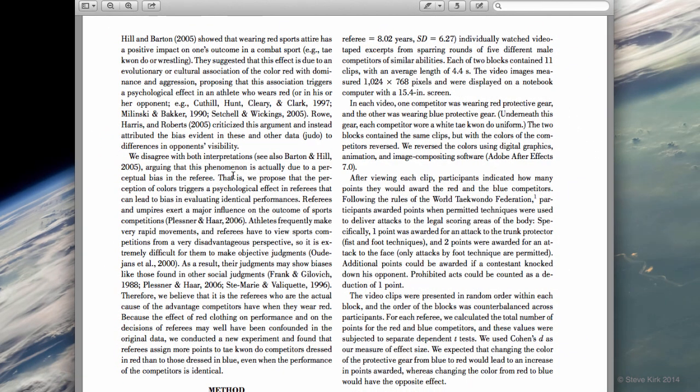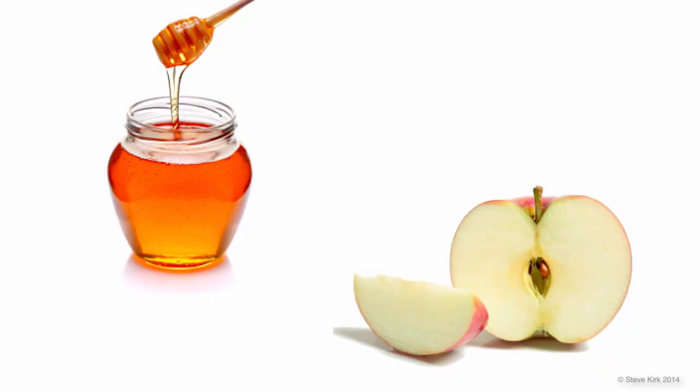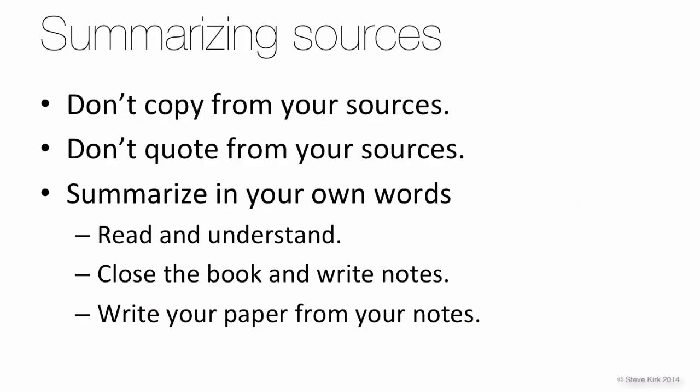One last point about citations: don't write from your head. For example, you might know from a high school science class or something you saw on TV that honey can be used to prevent apple slices from turning brown. But just because you know that, you can't write it in your paper. You need to find a trustworthy source of information to be evidence for your statement that honey can stop apples from turning brown. So in your introduction, you're going to be doing a lot of summarizing sources. Don't copy from your sources — this is considered plagiarism and will get you in big trouble. Don't copy more than three words in a row; you have to change what's written in the sources into your own words.